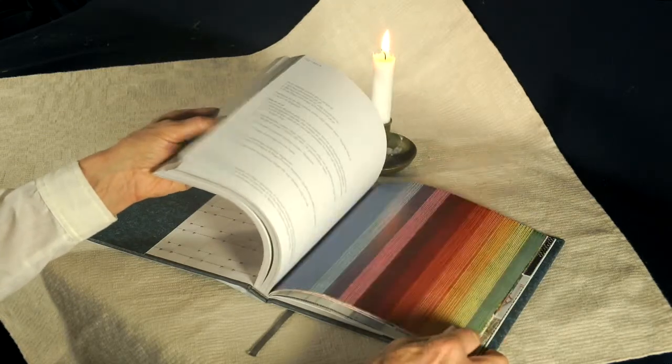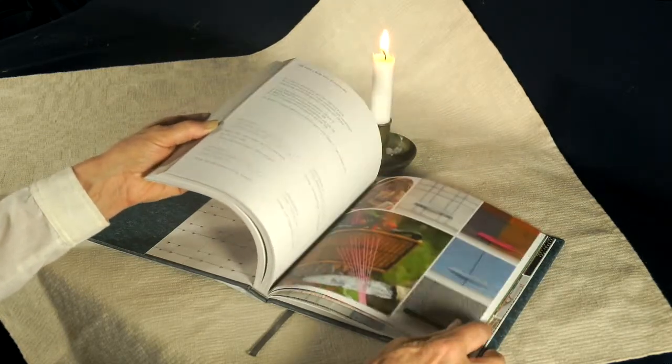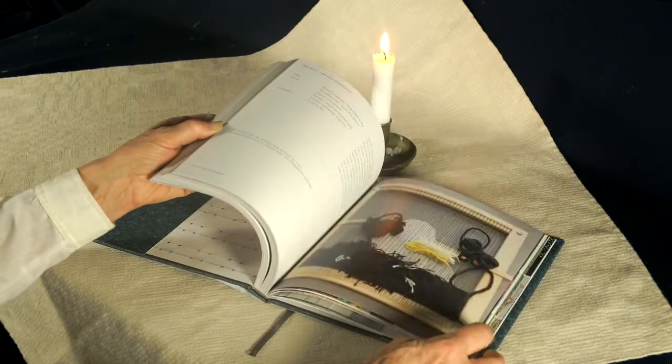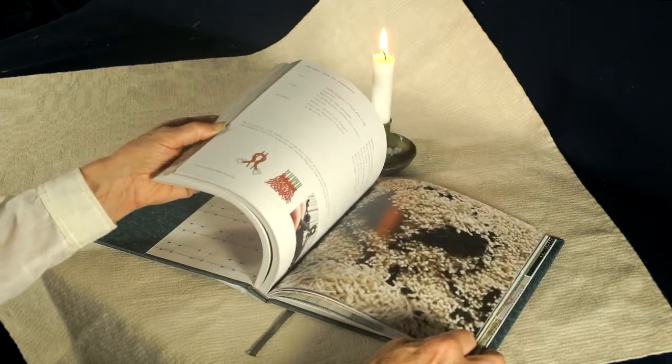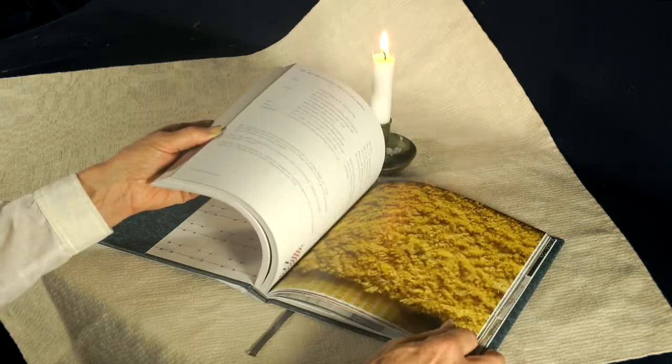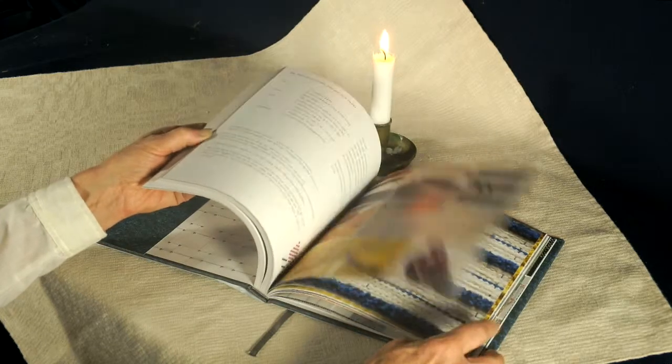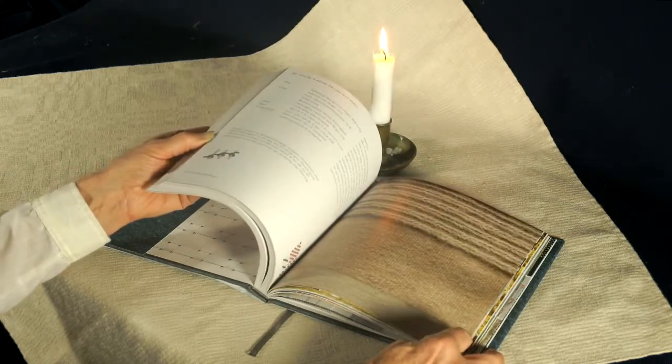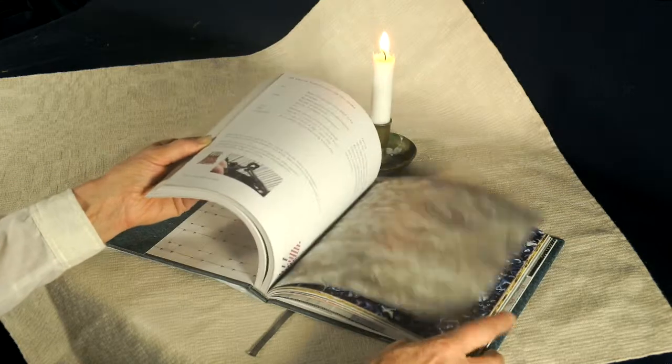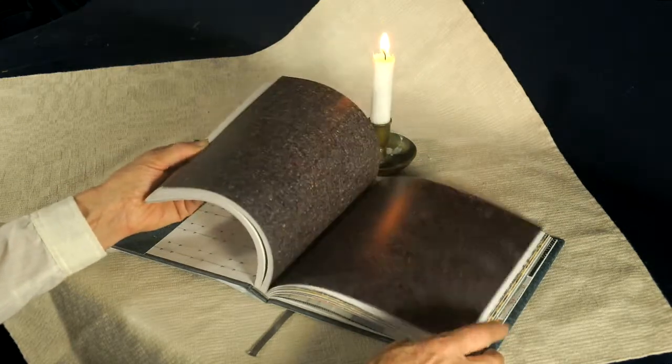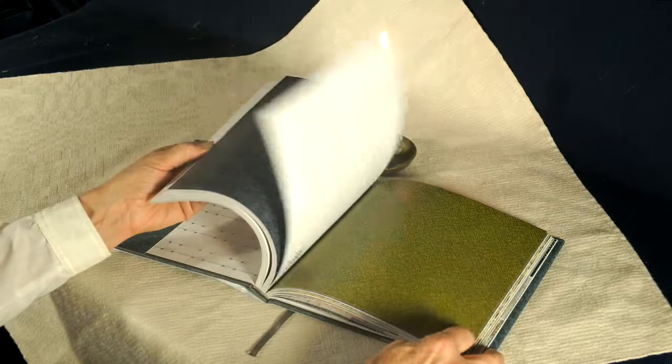All sorts of different things that she's done with it: textures, things you can do on a rigid heddle or any loom with often just two shafts or maybe four, different textures and color combinations, all sorts of different materials.